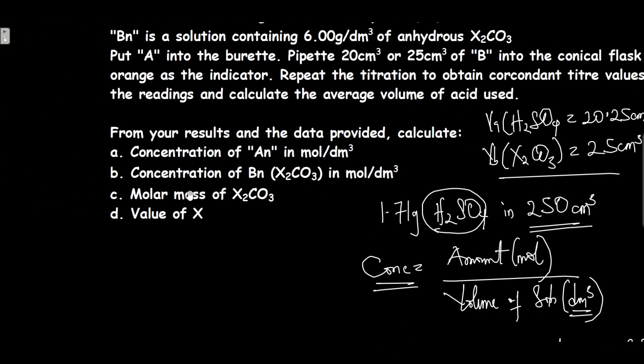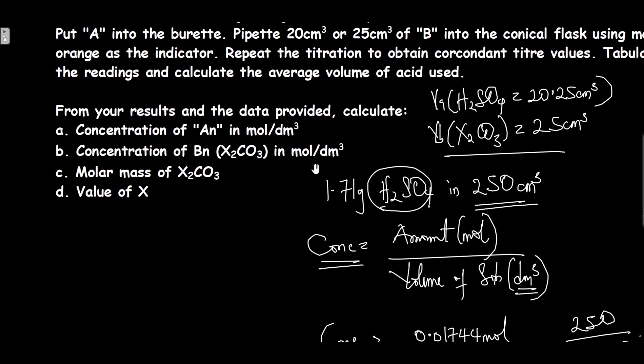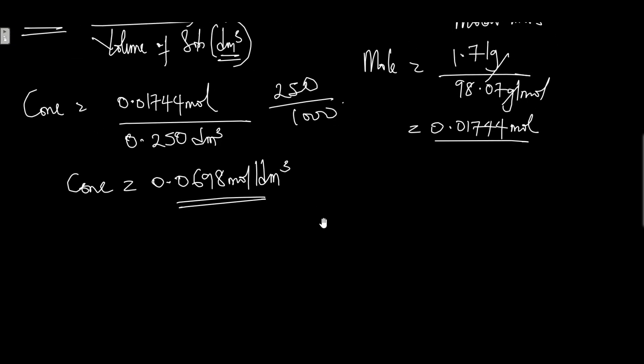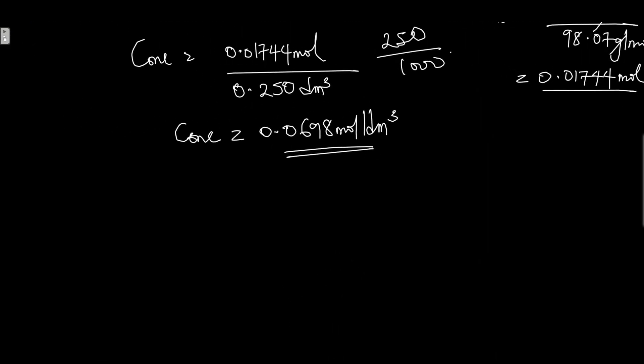Next question: calculate the concentration of BN in mol/dm³. We already know the concentration of the acid to be 0.0698 mol/dm³. Since we have the concentration, its volume, and we know the volume of the basic salt, we can determine its concentration using this formula: CAVA over CBVB equals NA over NB.